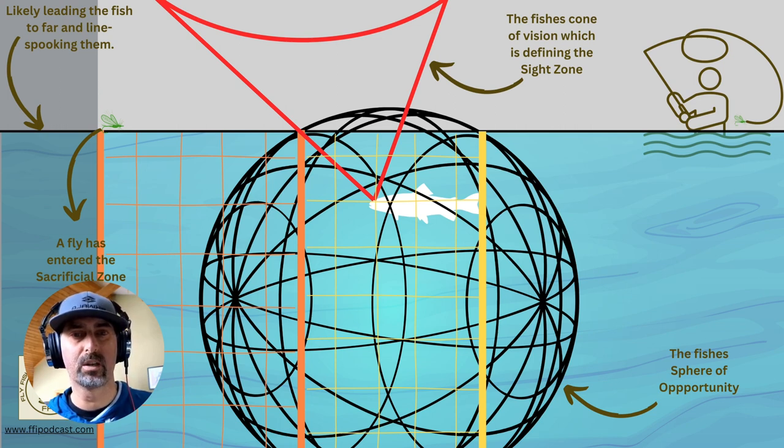The fish may move forward up into that point or backward and draw back, coming into this latter half of the yellow side. I talk about this sphere as the sphere of opportunity for the fish.